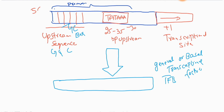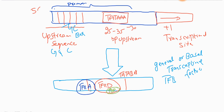The first step in initiation is the binding of TF2D to the TATA box. TF2D binds to the TATA box with the help of the transcription binding protein TBP. After binding of TF2D, TF2A binds to TF2D and stabilizes the binding of TF2D.